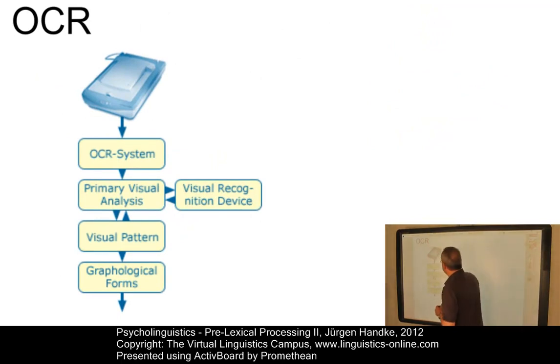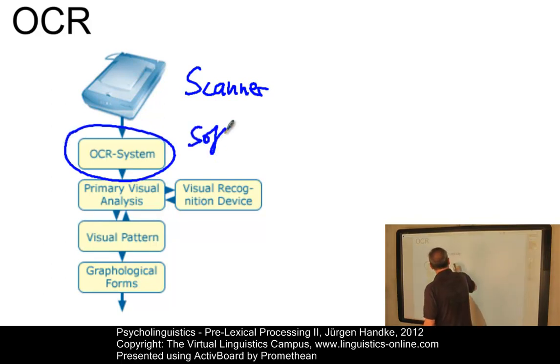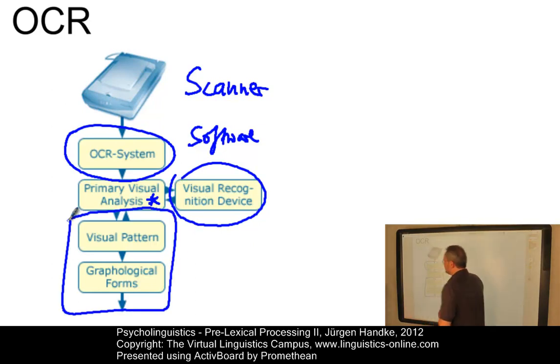Now, an optical character recognition, or in short OCR system, consists of a scanner and some sort of OCR software. The software is installed on the machine where the result of the scan is processed. After a primary visual analysis, which uses some sort of visual recognition device, a visual pattern, eventually some sort of graphological forms, are developed on the basis of pre-stored geometrical visual patterns.